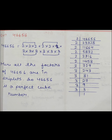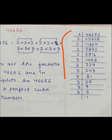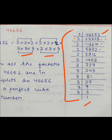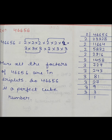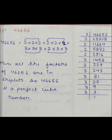Fifth number is 46,656। इसी तरह से prime factorization करेंगे। 2 से divisible है क्योंकि ones place पर 6 है। Prime factorization के बाद: 2 का पहला triplet बना, 2 का second triplet बना, 3 का first triplet बना, 3 का second triplet बना। कोई भी factor triplet से बाहर नहीं है। Here all the factors of 46,656 are in triplets, so this is a perfect cube number।